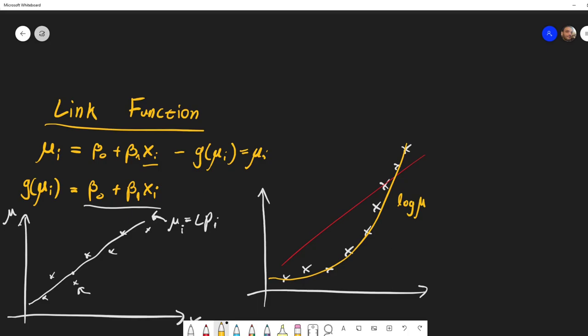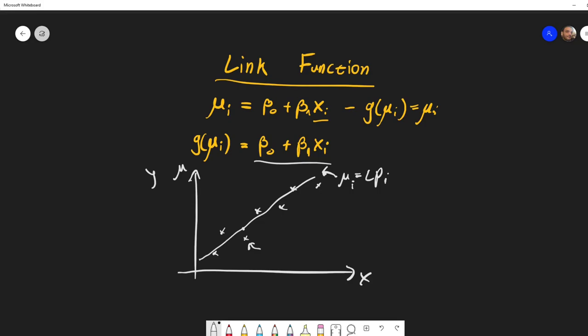Maybe we say that the log of mu is related to some predictor variable, some linear predictor. And doing the log on these values will bring this line into something more like this line.